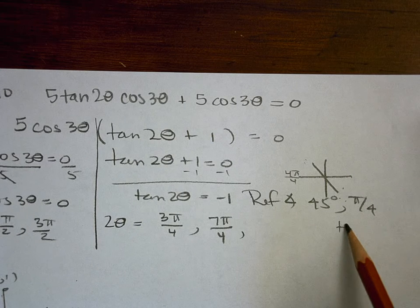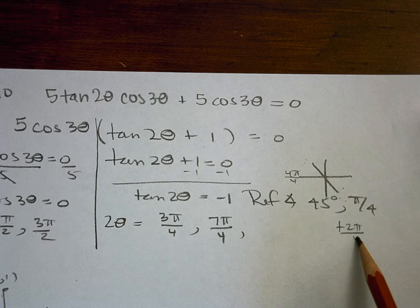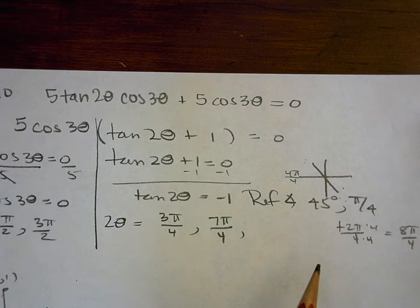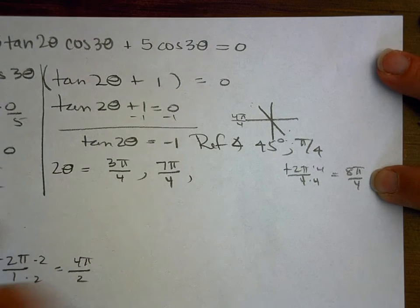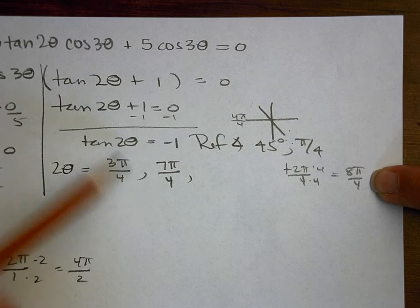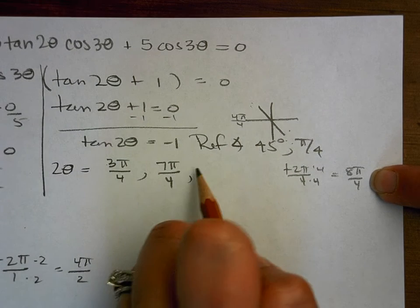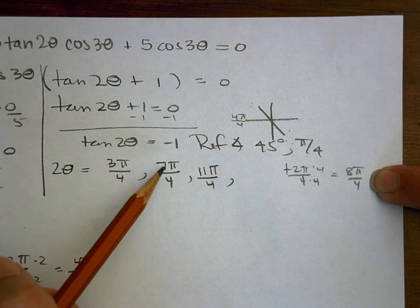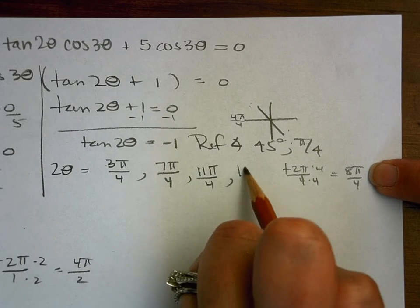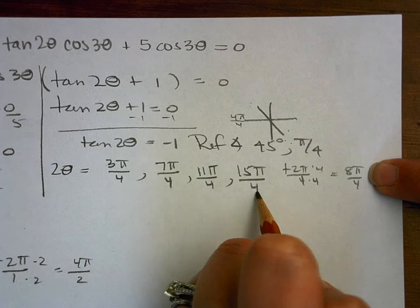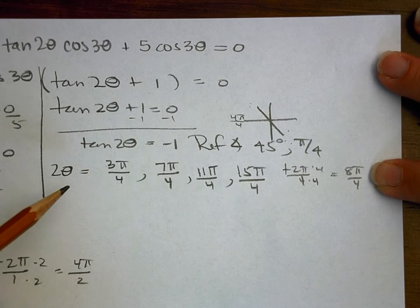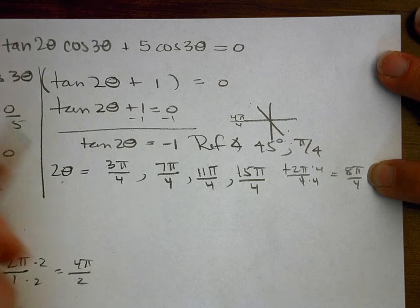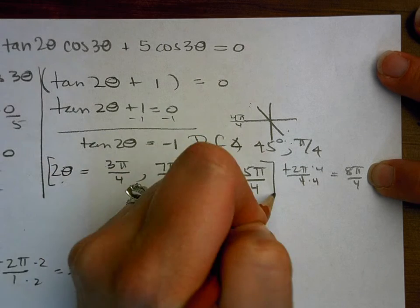So I'm really adding 8 pi over 4 to everything. So I'm going to add 8 pi over 4 to this, so 3 pi plus 8 pi, same denominator, and 7 pi plus 8 pi with same denominator. So that is my rotating through twice. But now I need to solve for theta itself, so I'm going to multiply everything through by one half. So all the numerators will be multiplied by one and all the denominators by two.